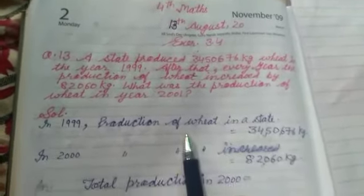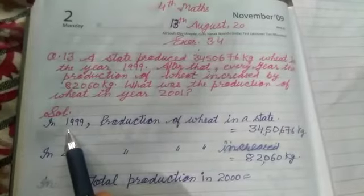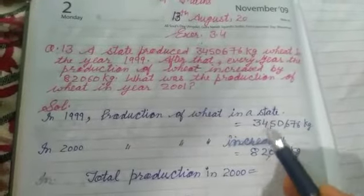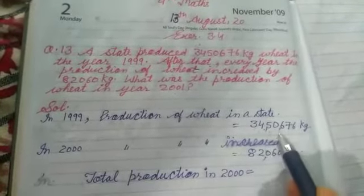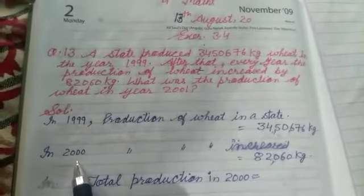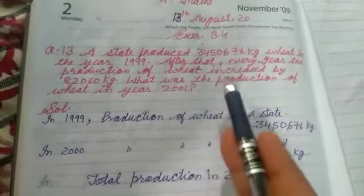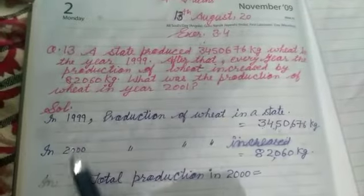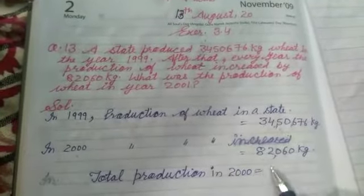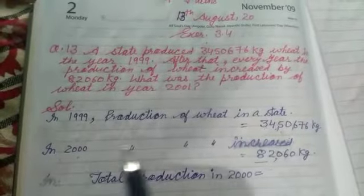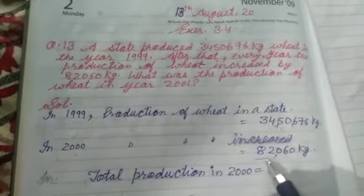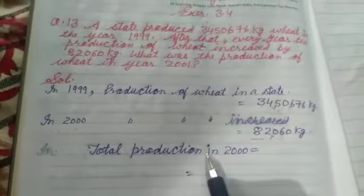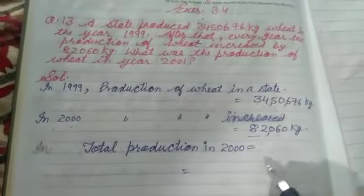In 1999, production of wheat in a state was 34,50,676 kg. Into 2000 — matlab uske baad har saal jo gehun ki production badhi, 82,060 kg. Toh 2000 mein gehun ki jo production kitni badhi? In 2000, production of wheat increased by 82,060 kg. The total production in 2000 — toh hum in dono ko plus karenge.